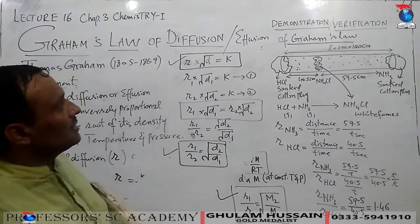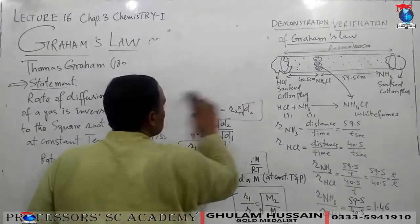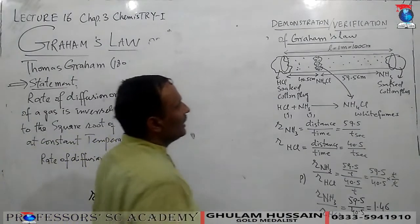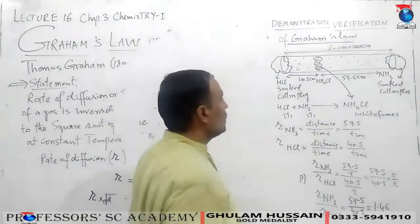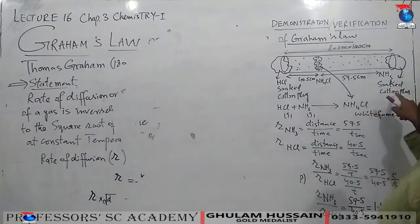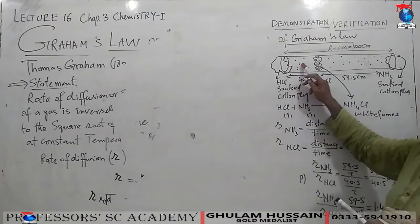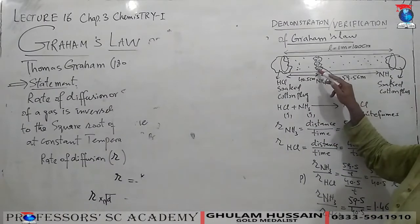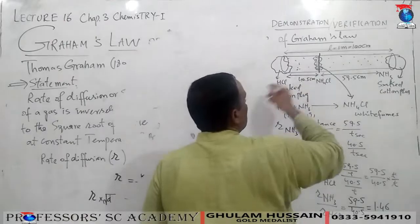The next topic is the experimental verification of Graham's Law of Diffusion. In this experiment, a 100-centimeter-long transparent glass tube was taken. At both ends simultaneously, a cotton plug soaked in acetic acid (HCl) and a cotton plug soaked in ammonia were inserted. Ammonia molecules diffused into the tube from one end and HCl molecules from the other.